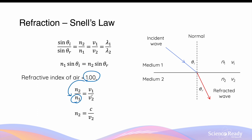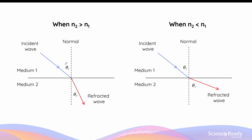This simplifies Snell's law to give us an expression for the refractive index of the second medium, n2, which is equal to the speed of light in air divided by the velocity of light in the second medium, v2. As we discussed, the value of the refractive index determines the extent to which the light wave refracts.